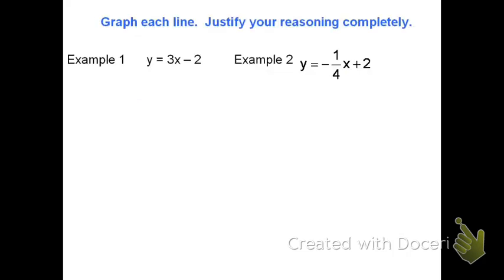Let's look at a few examples. Given the equation y equals 3x minus 2, identify the slope and y-intercept. The slope is 3 and the y-intercept is zero comma negative 2.